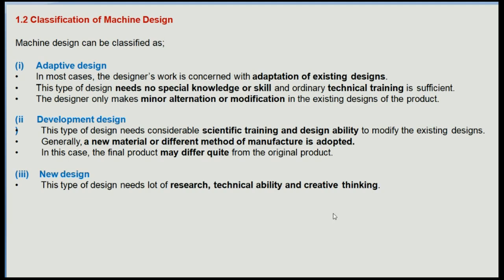The classification of design is generally three types. The first is adaptive, the second is development, and the third is new or creative design. In adaptive design, an existing design is adapted with minor modifications. In development design, there are several changes in material or method of manufacture. The third, new or creative design, means creating things that didn't previously exist.